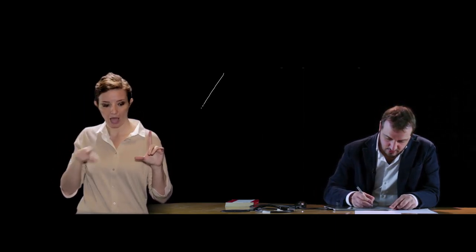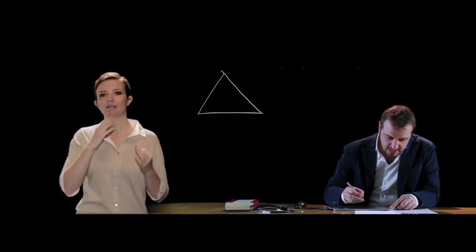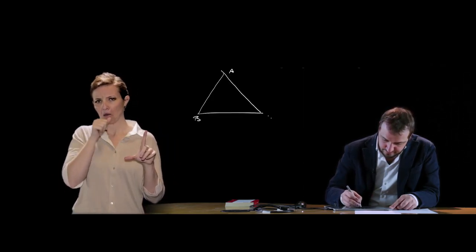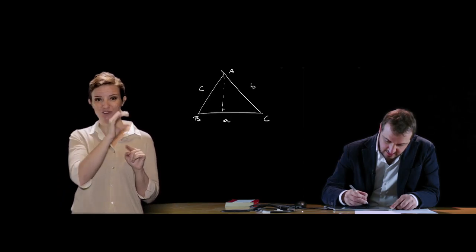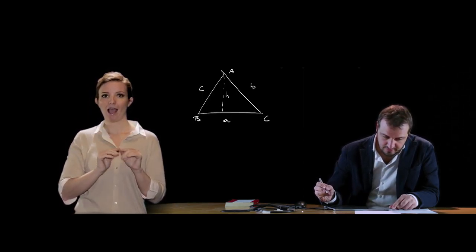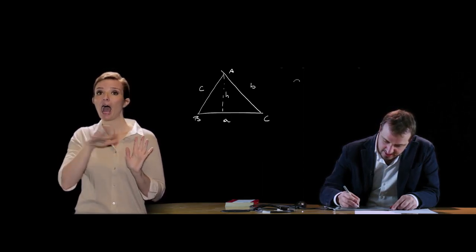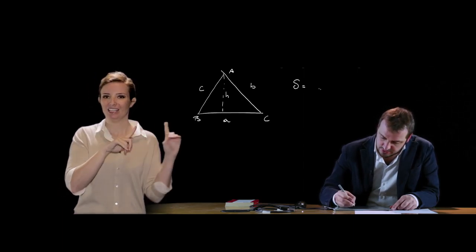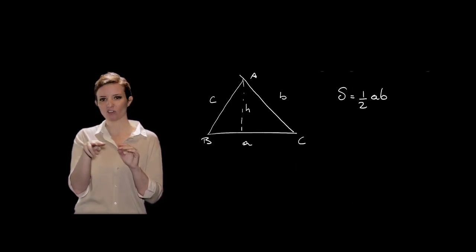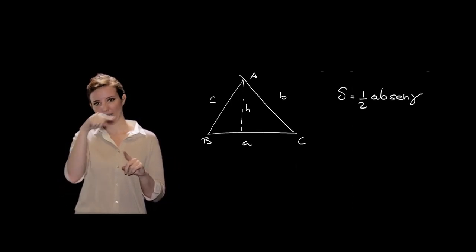Ci sono poi delle applicazioni dei teoremi sui triangoli rettangoli. Per esempio, possiamo fornire una formula relativa all'area di un triangolo note le misure di due lati e dell'angolo compreso. Prendiamo il triangolo scaleno generico ABC, tracciamo l'altezza relativa al lato A, indicata con H. L'area S è data dal semiprodotto di due lati per il seno dell'angolo compreso, quindi: S = (1/2)·AB·sin(γ).